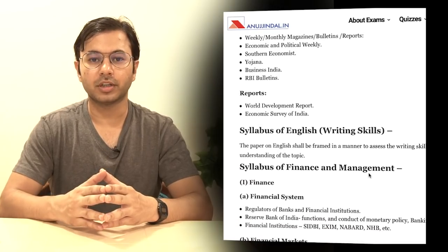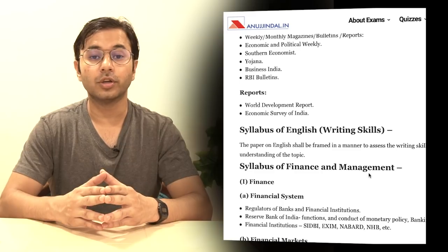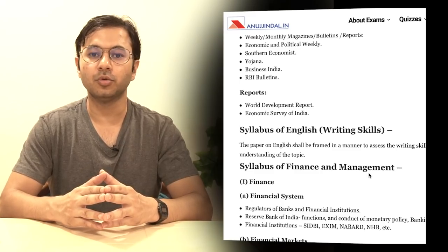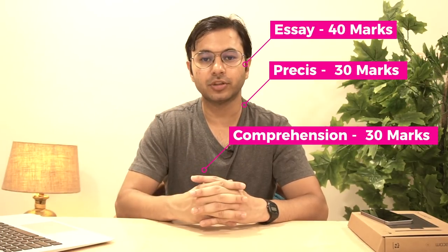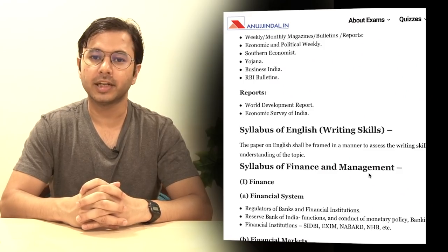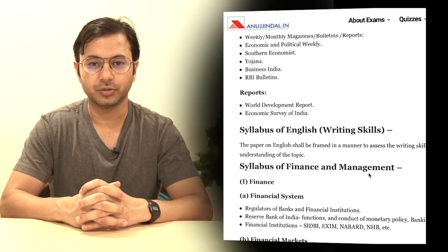The third and one of the most important areas of phase 2 is English writing. Although it is a dreadful subject because it is descriptive in nature, it is the most easy to score marks in. There are 3 broad sections in English descriptive: number 1, essay writing which is normally of 40 marks; number 2, precis writing which is normally of 30 marks; and number 3, comprehension writing which is also of 30 marks. If you consistently write 1 essay per week for the next 6-7 months, this is the most scoring subject for you.